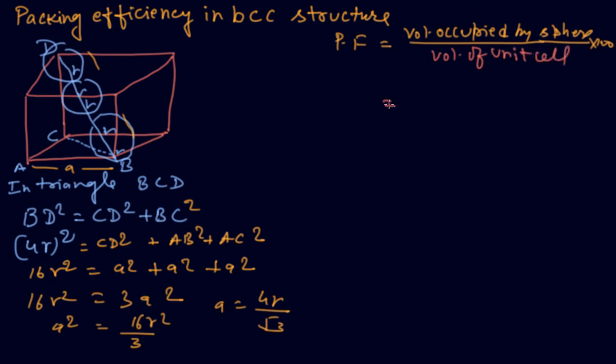The number of atoms in the BCC are 2. So multiply with 2 and put the value of sphere 4 by 3 pi R³ and volume of unit cell is A³ multiply with 100, and edge length we have found out.